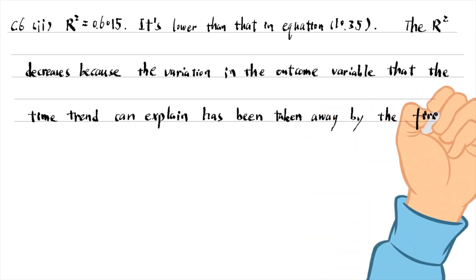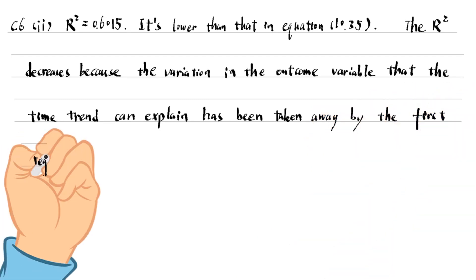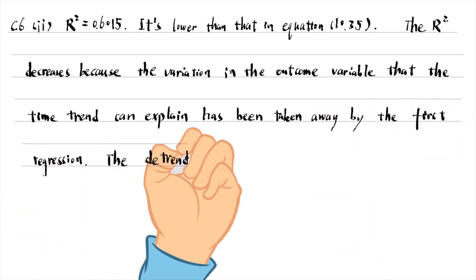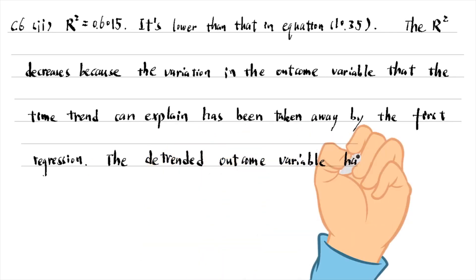That is, the detrended outcome variable has less variation because its time trend is removed.